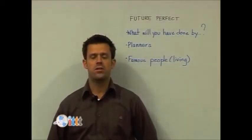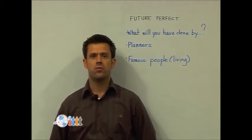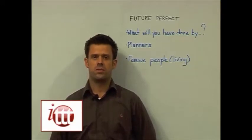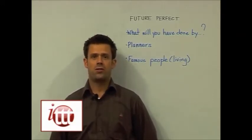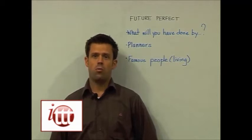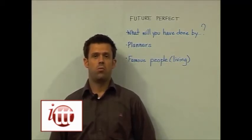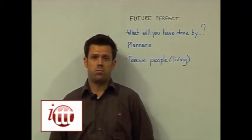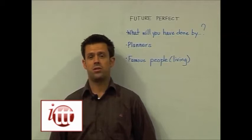Now let's take a look at the teaching ideas for the future perfect tense. This tense is used to talk about actions that will have happened by another point in time in the future. We could be asking questions like, what will you have done by the age of 50? What will you have accomplished by next year?